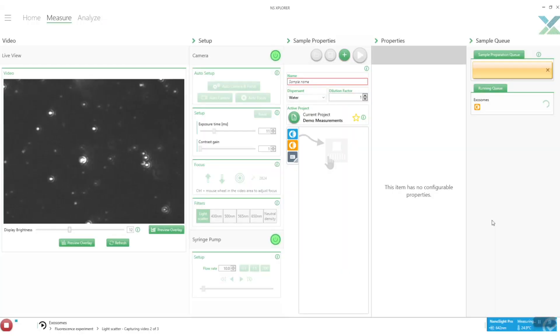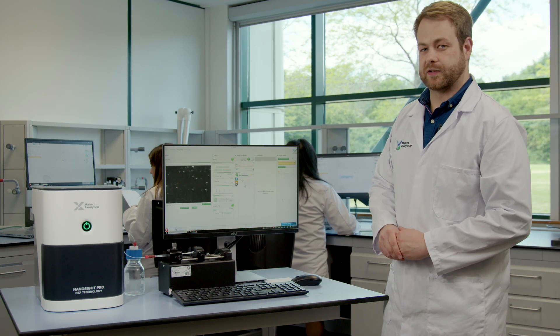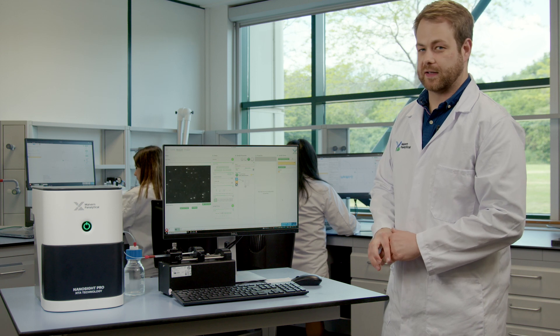Now we're just going to change our number of captures down to three and then we can click play and the measurement will run. It's going to start capturing so you see this green progress bar going along and it will go through three captures and each time in between the captures it flushes sample through ensuring that the sample is not going to be photobleaching during the measurement.